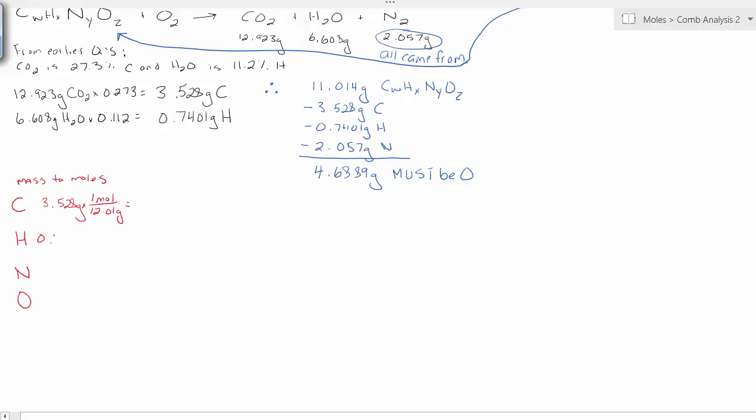Get a little labeling in here. We'll take hydrogen, 0.7401 times 1 divided by 1.01. Nitrogen, 2.057 grams, 1 mole of nitrogen, 14.01 grams. Remember, you're working with atomic nitrogen there. 4.689 grams of oxygen. We'll run some calculations and get some molar values here.